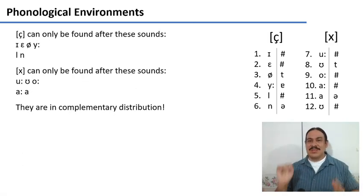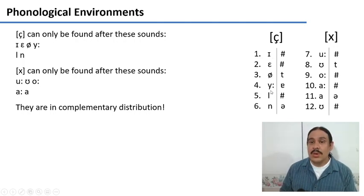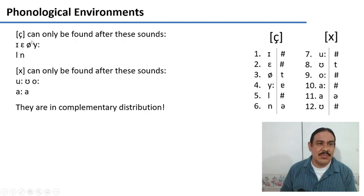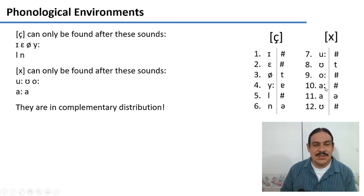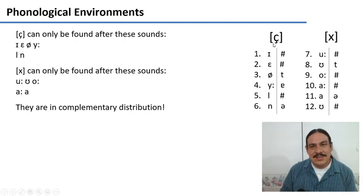So let's take a look at the left part of the environment. With the palatal one, we find that the vowels that come before it are vowels like I, E, Ü, and Ö, and also consonants like L and N. For the velar one, the sounds that precede it are vowels like U, O, and also long A and short A. They do appear to be in complementary distribution because none of the vowels in the first group appear in the second group. These two groups of sounds are completely different, so they must be what's conditioning the appearance of either the palatal or the velar alternative. These two sounds are in complementary distribution.